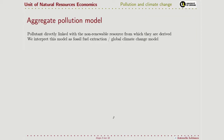We are now going to study the aggregate pollution model, where the pollutant is directly linked with the non-renewable resource on which it depends. We will interpret this model as fossil fuel extraction and pollution leading to global climate change. Our objective will be similar to previous lessons: to find the optimal extraction and pollution path.